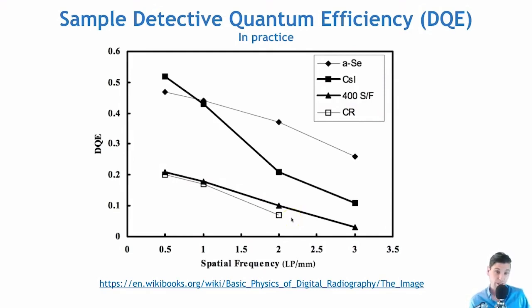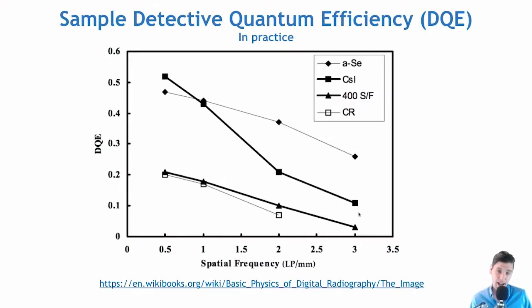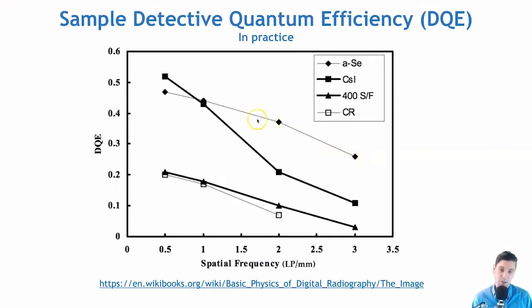More recent detector technologies using cesium iodide convert x-ray photons to light photons using a columnar structure that causes less spreading of the light. This leads to a higher MTF in general and a higher DQE at higher spatial frequencies. The amorphous selenium detector performs best at the highest spatial frequencies — instead of converting x-rays to light which is then measured as electrons, the x-rays are converted directly to electrons, resulting in less blurring.